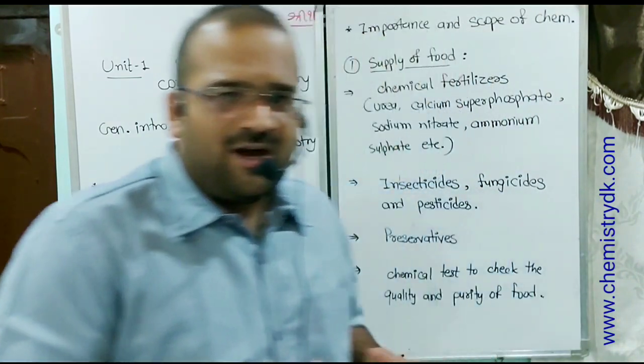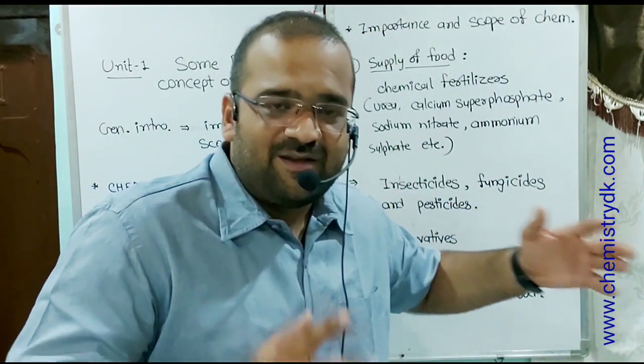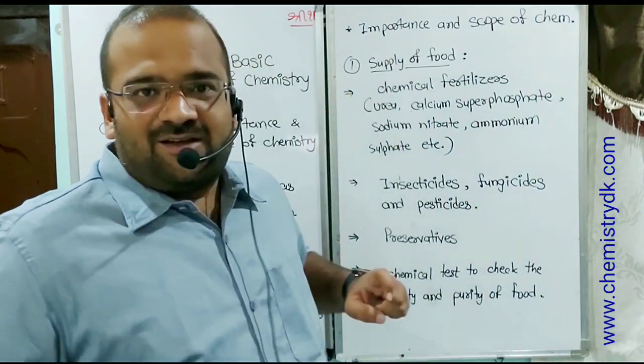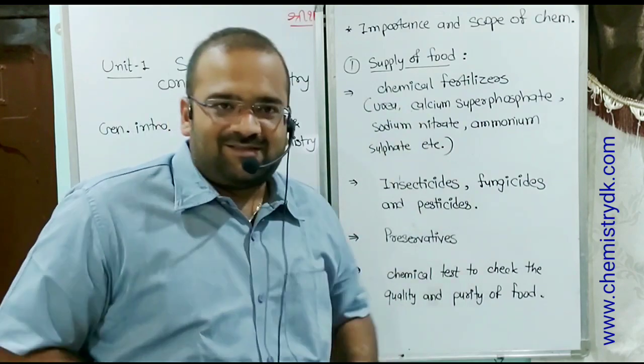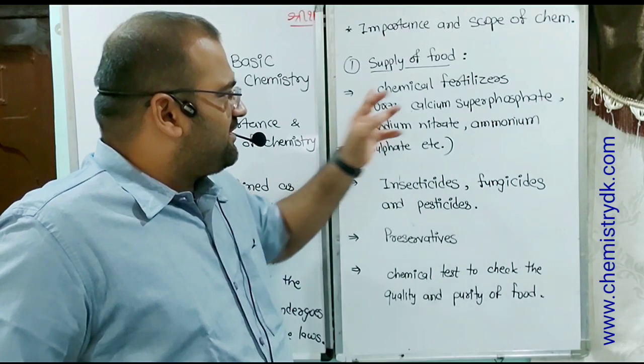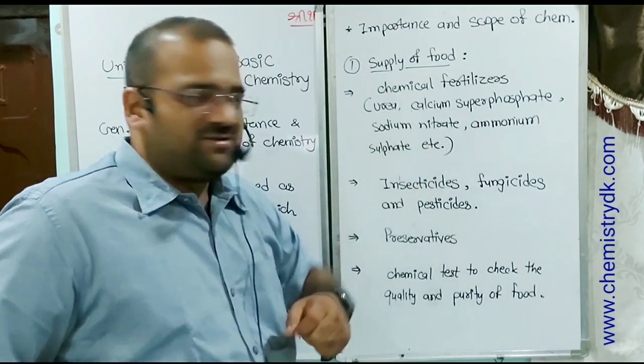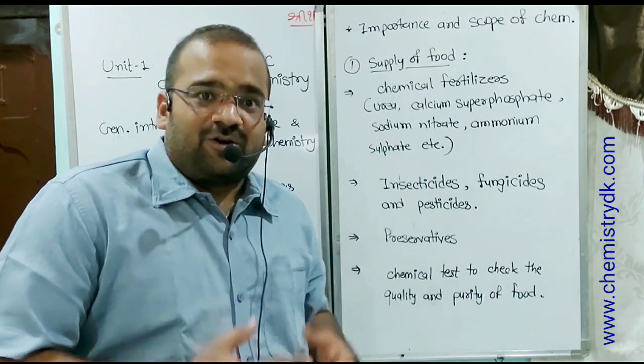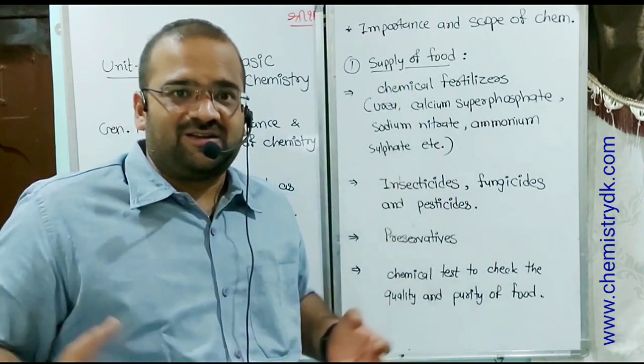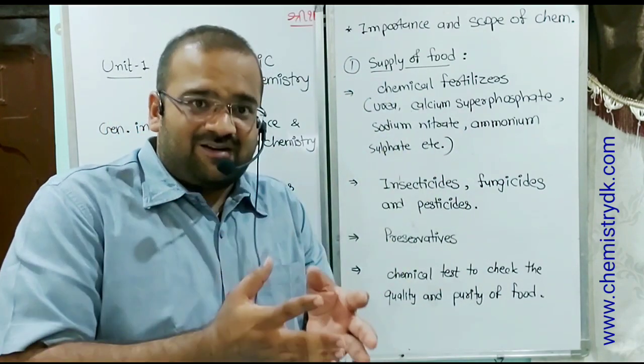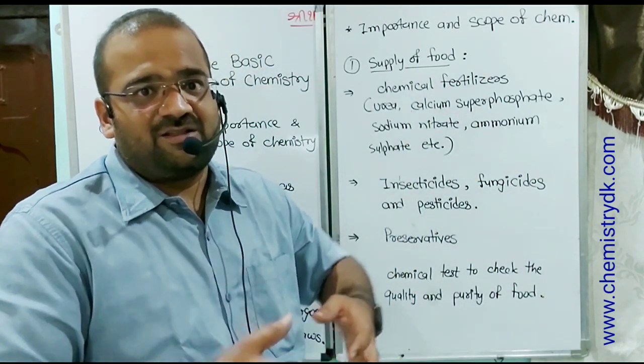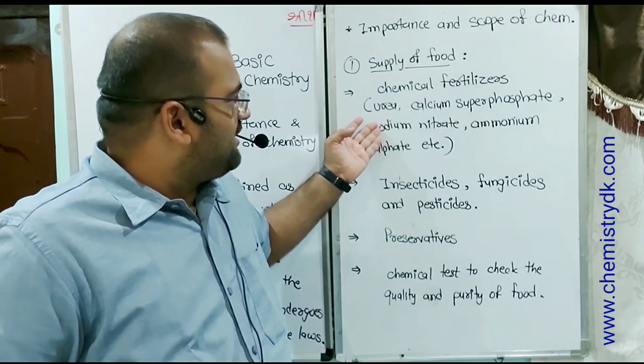First of all, different fields have been associated with so many chemicals. In food industry there are many fertilizers, chemical fertilizers like urea, calcium superphosphate, sodium nitrate, ammonium sulfate etc. are used so that crop production can be increased because of lots of population. Recently there is a need to increase the crop production, so we can increase it by using these fertilizers.